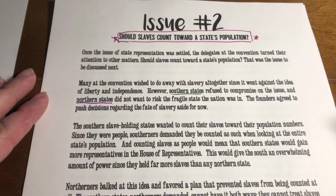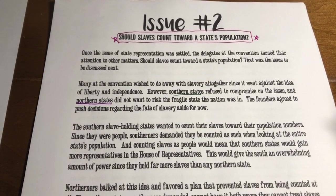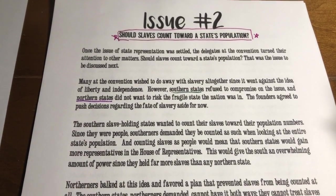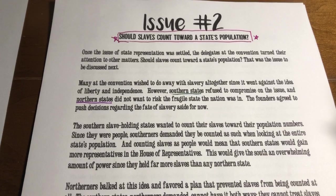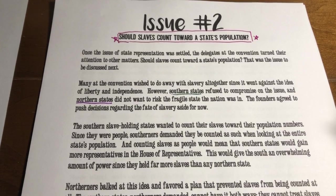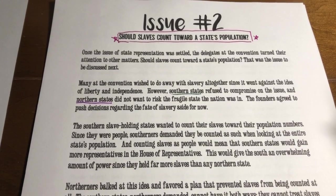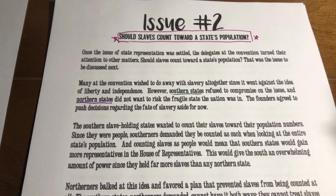We're going to continue discussing the compromises that were made in the Constitution. We're moving away from the Articles of Confederation and trying to make something new that we think will work — a government that'll work for us. So the Constitution is being written.